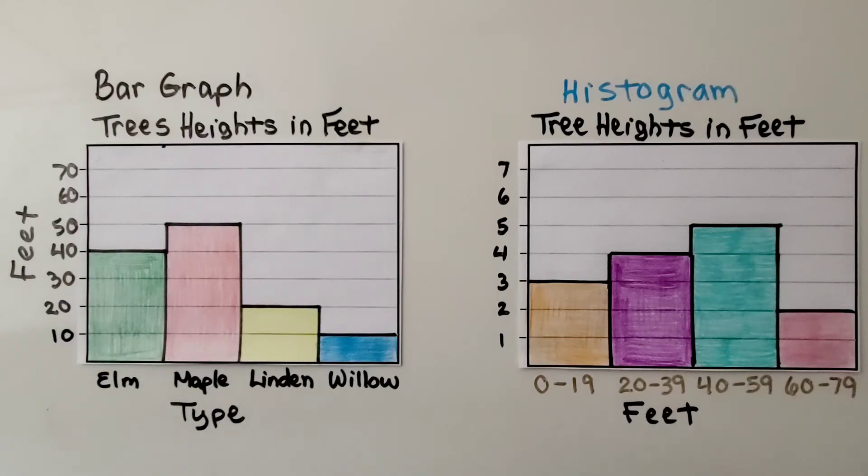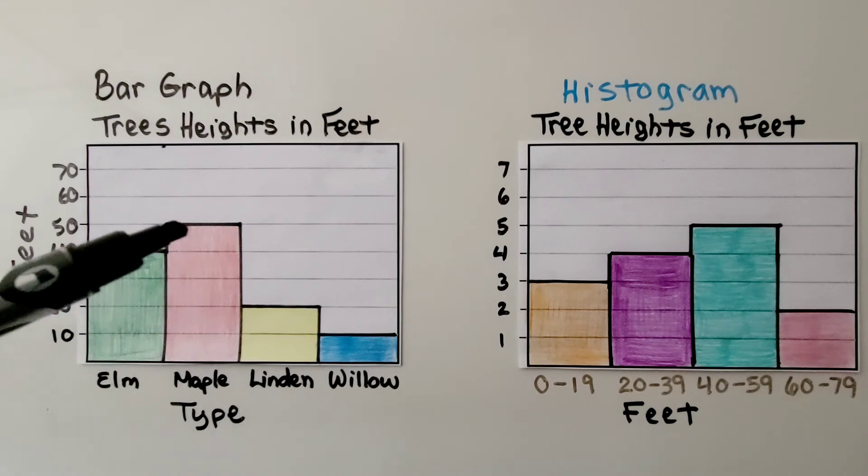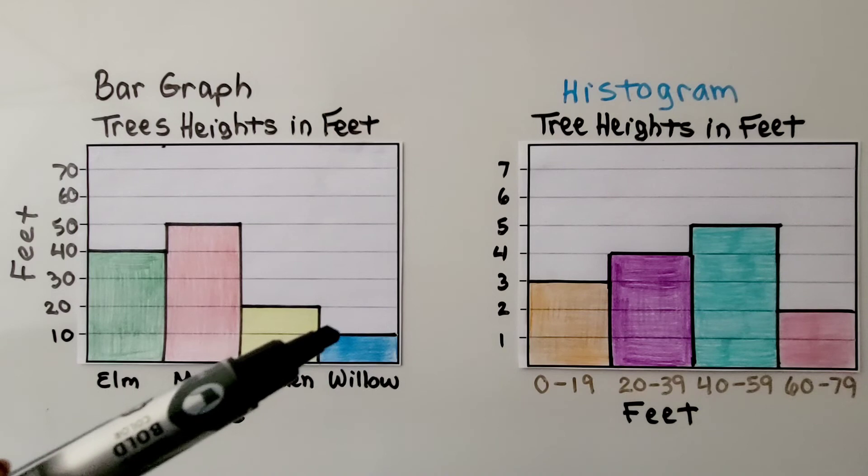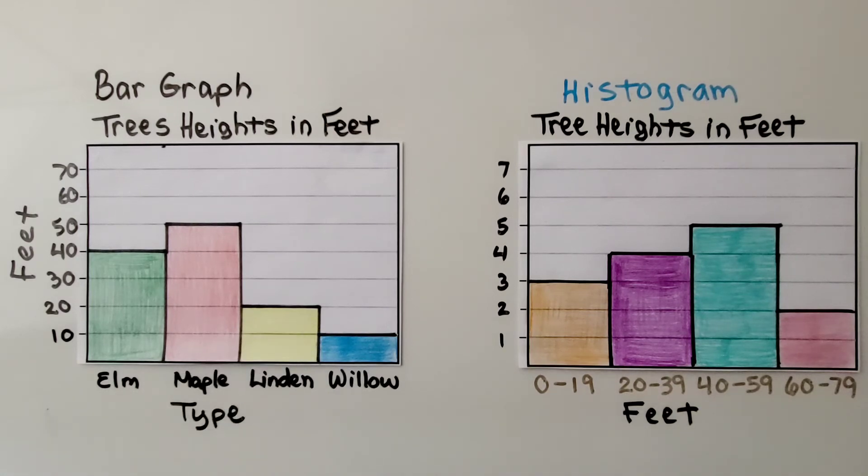So here we have a bar graph showing tree heights in feet. We've got the name of each type of tree and the tree height in feet. We can see the elm is 40 feet tall, the maple is 50 feet tall, the linden is 20, and the willow is only 10. So it must be a new sapling. Now we could put these tree types in any order and it wouldn't affect the data in the bar graph. We could have the elm as 40 feet over here and the willow as 10 feet over here. Doesn't affect the data. Doesn't change the meaning.